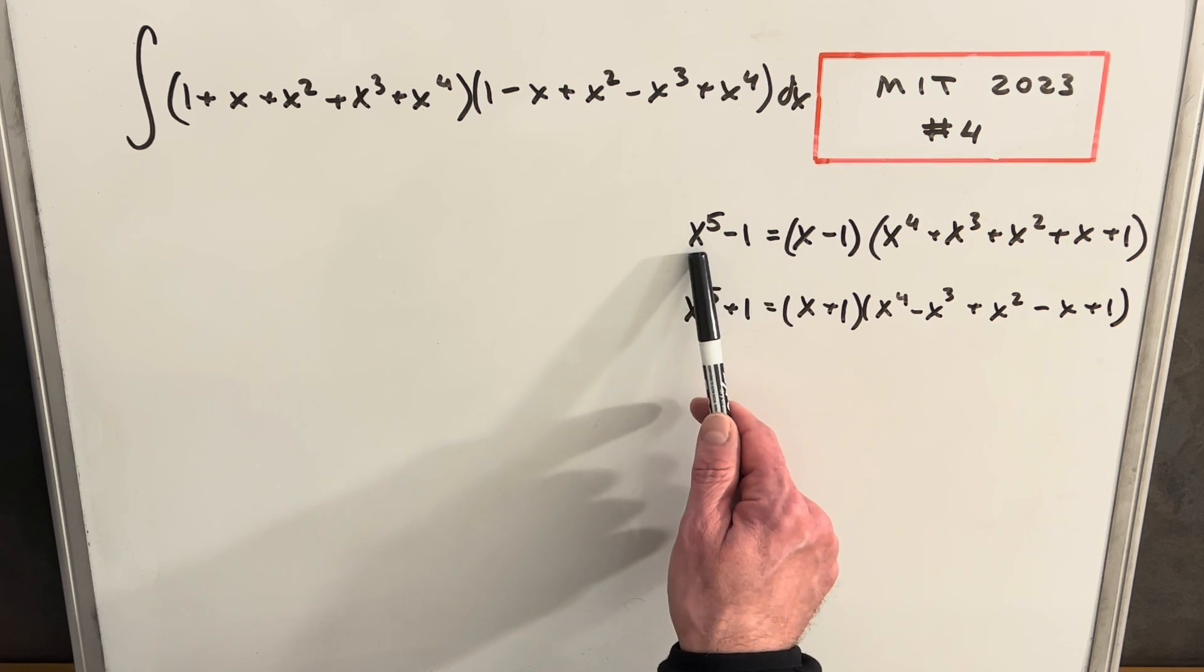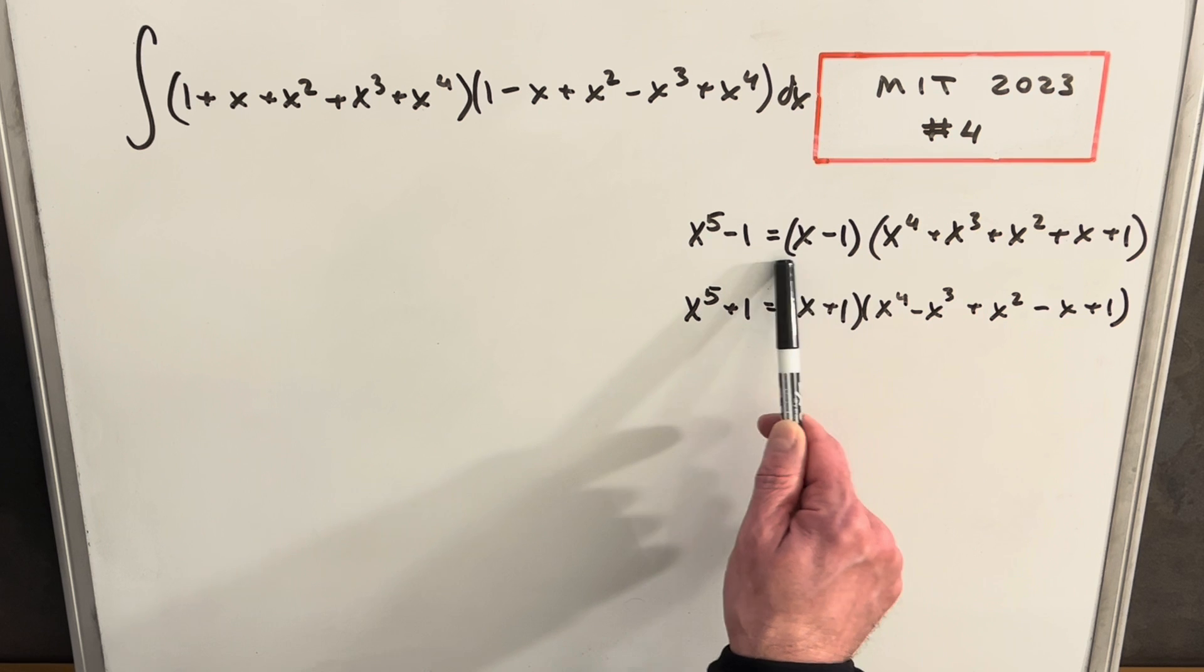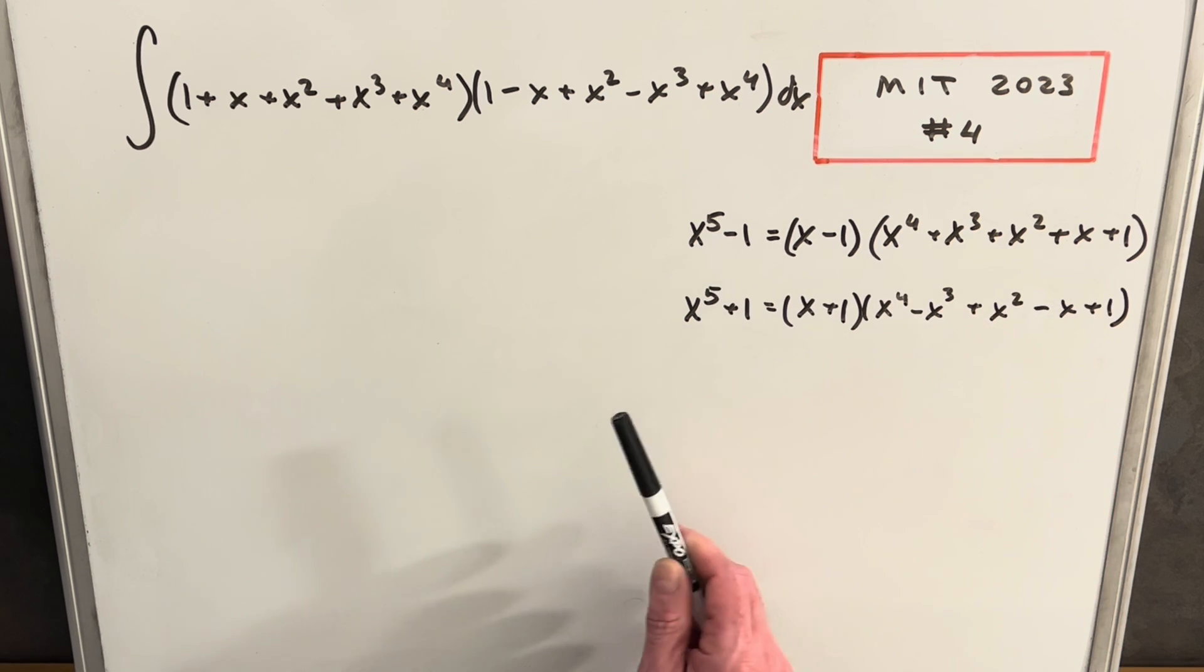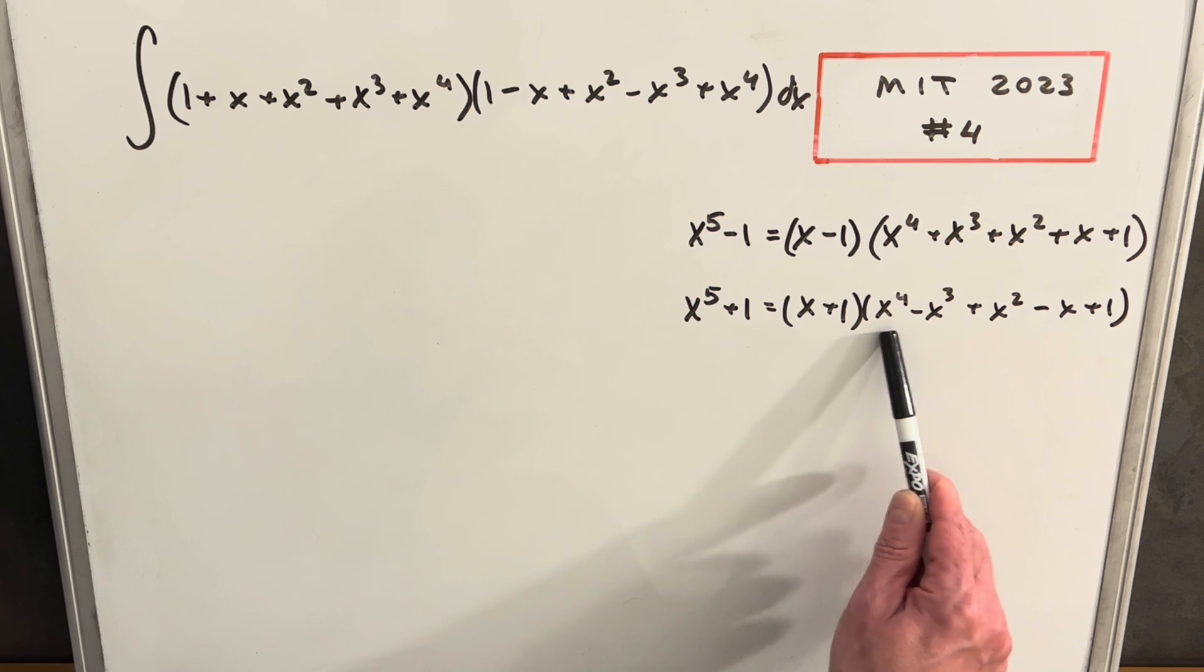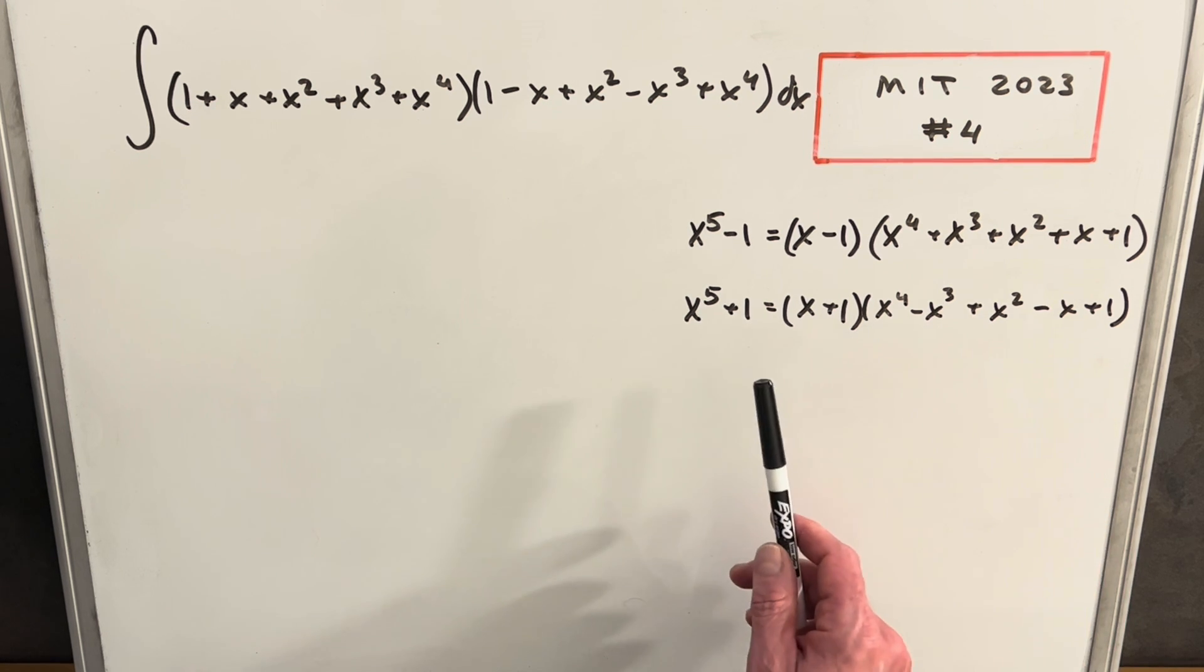But you'll notice because this has to have a root of one, so we can pull an (x - 1) out of this and get this. This is similar, but I think the power has to be odd to have this exact pattern of the signs changing.